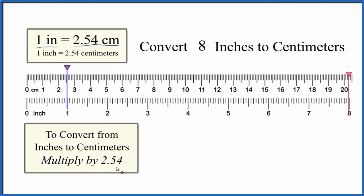Like this: we take our 8 inches, multiply it by 2.54, and that's centimeters per inch. Inches cancel out, we're left with centimeters. So 8 inches equals 20.32 centimeters.